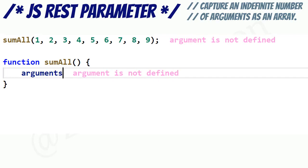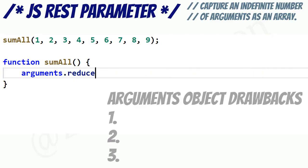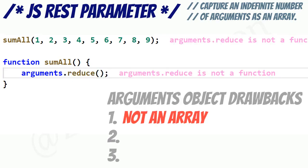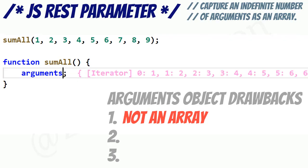Before, we'd use the arguments object to access all the passed values, but there are some drawbacks to that. Number one, we usually want to use some array methods here, but the arguments object is not an actual array, so we can't use any array methods without some conversion work first.